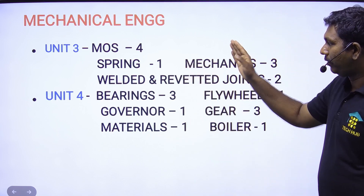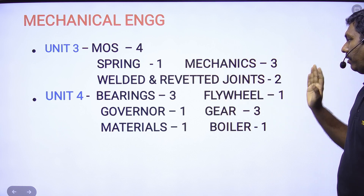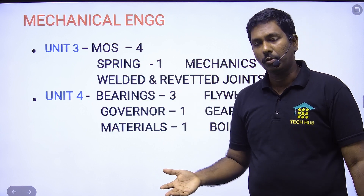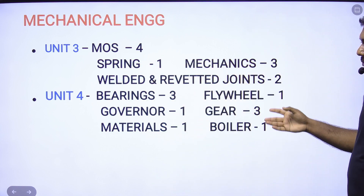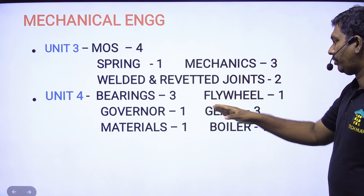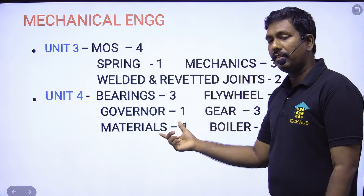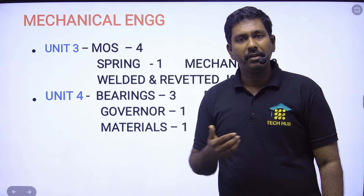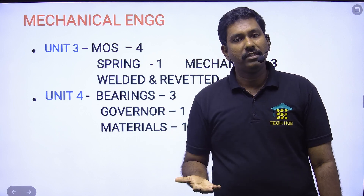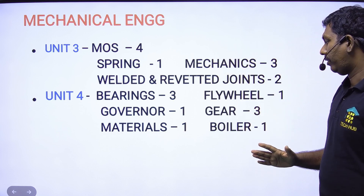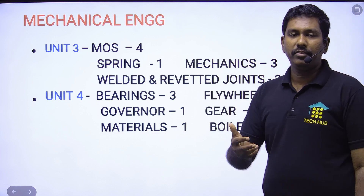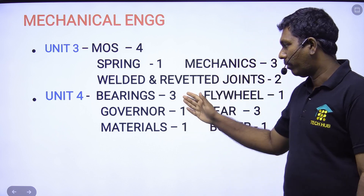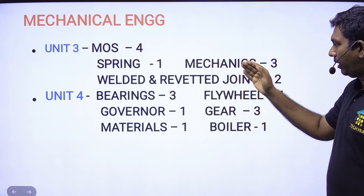The spring, the mechanics — 3. The welder and the reference. Module 5 is the most important. Module 5 is 3, module 4 is 3, module 5 is 5. Gear 3. The materials are heat treatment. We don't have the basic property of engineering materials. We don't have the boiler. We don't have the flywheel. We don't have the common questions. The governor is very simple. The bearing is very simple.